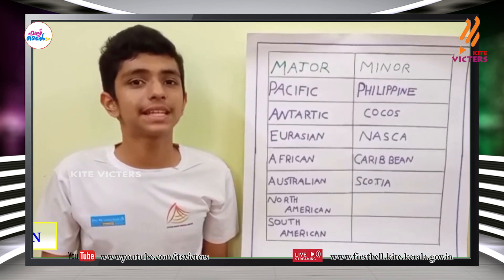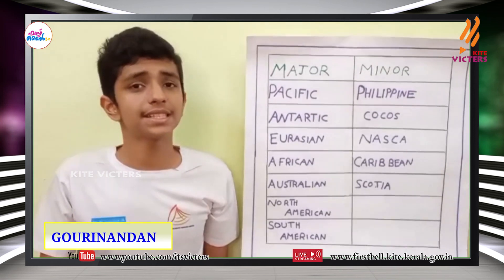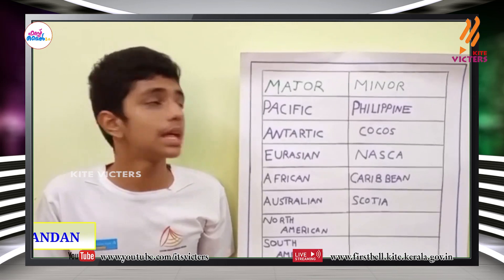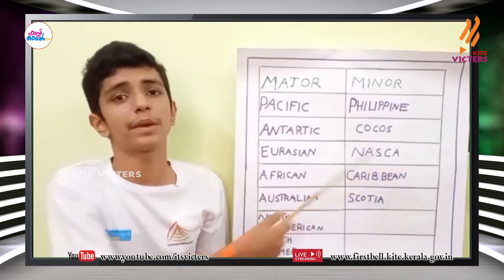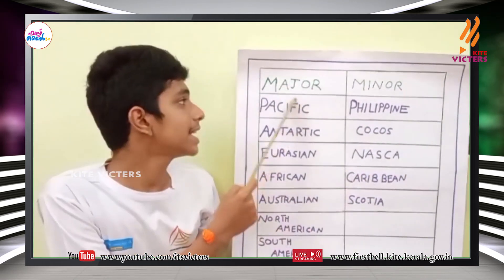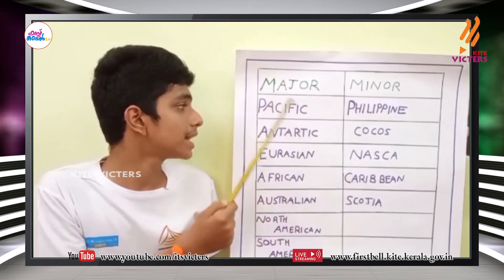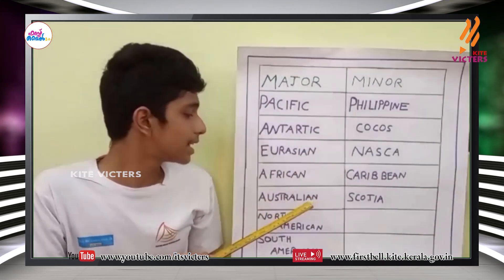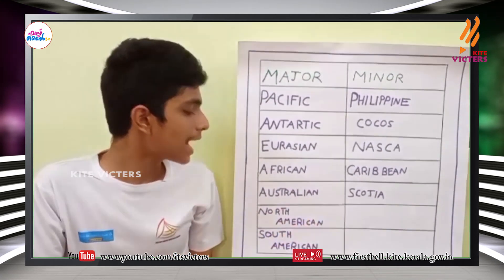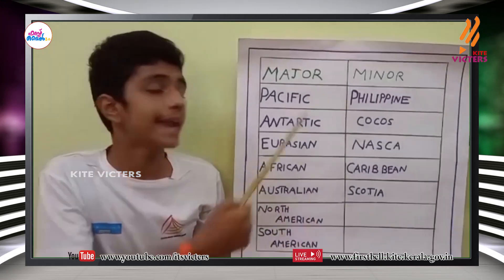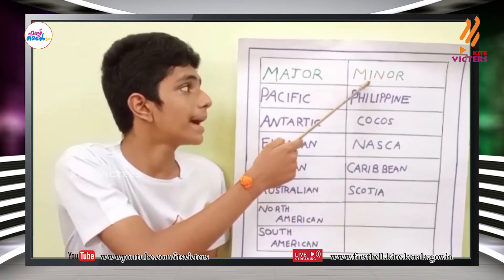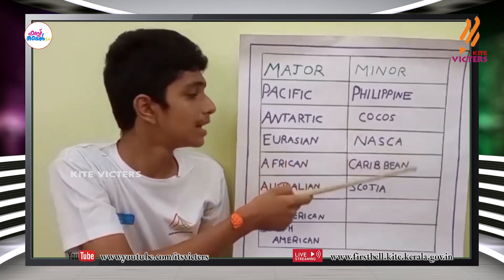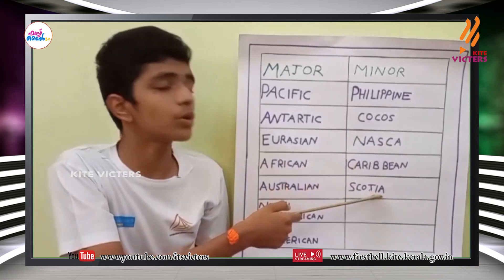Now let's take up the activities given by the social science teacher in our previous class. The first activity was to classify the plates into two: the major plates and the minor plates. The major plates consist of the Pacific plate, the Antarctic plate, the Eurasian plate, the African plate, the Australian plate, the North American plate, and the South American plate. The minor plates consist of the Philippine plate, the Coco plate, the Nazca plate, the Caribbean plate, and the Scotian plate.